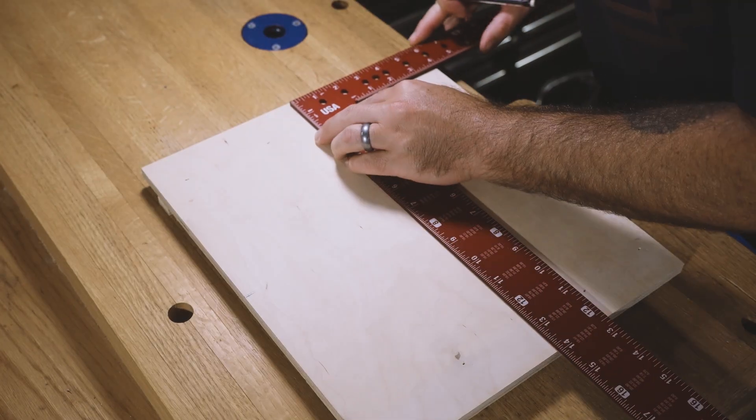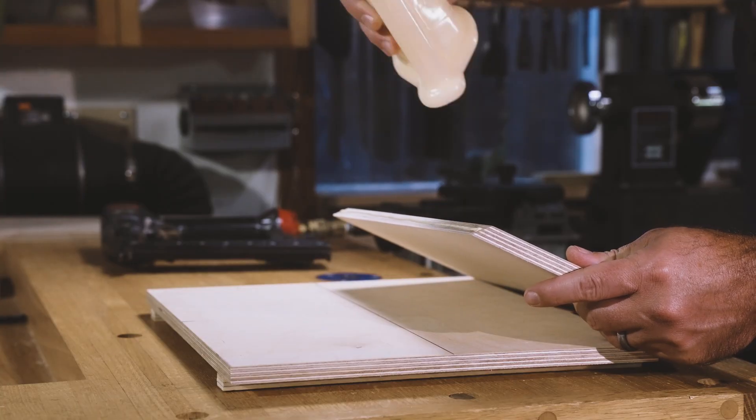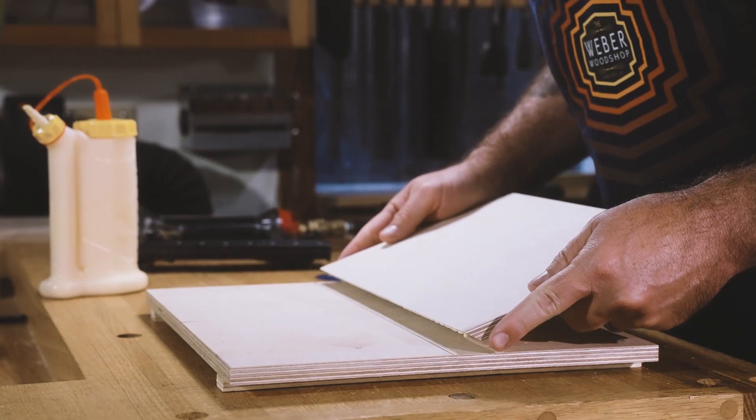To assemble the angled beds, start by adding a center line across the bottom piece. Add some glue, and then place the beveled edge along your center line.